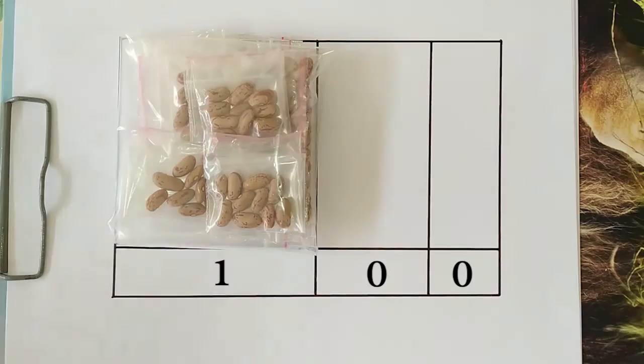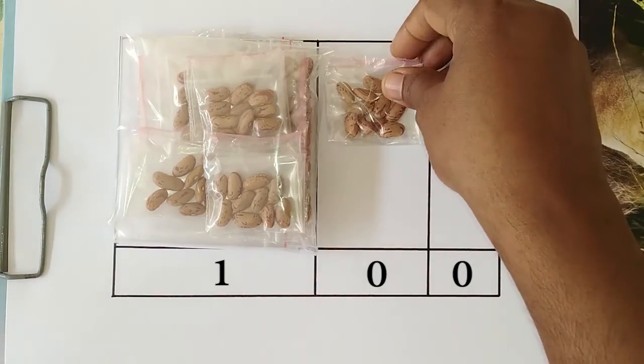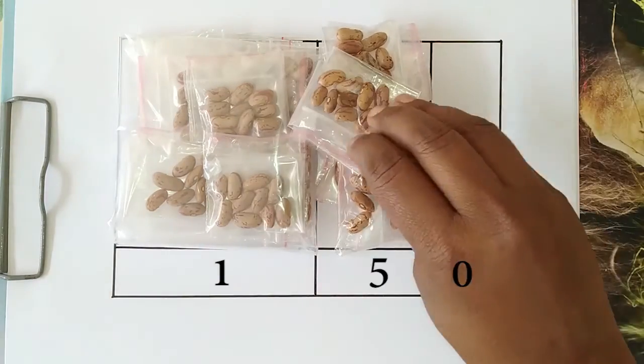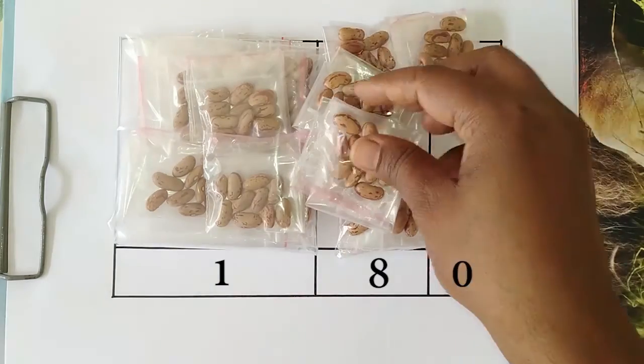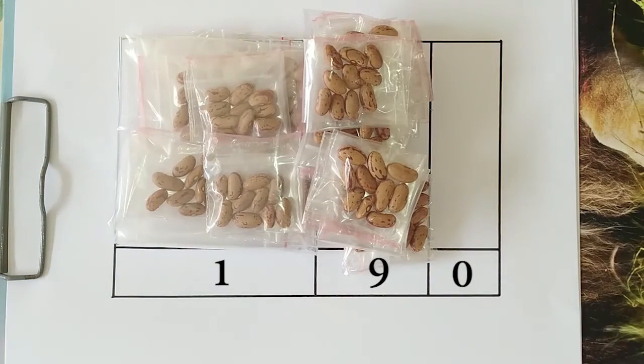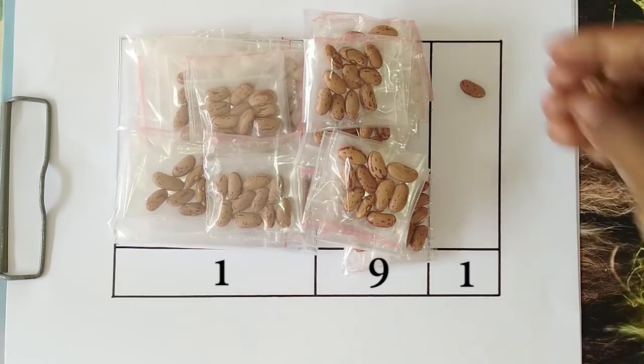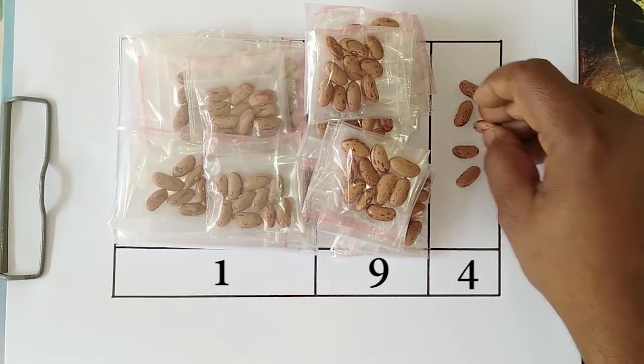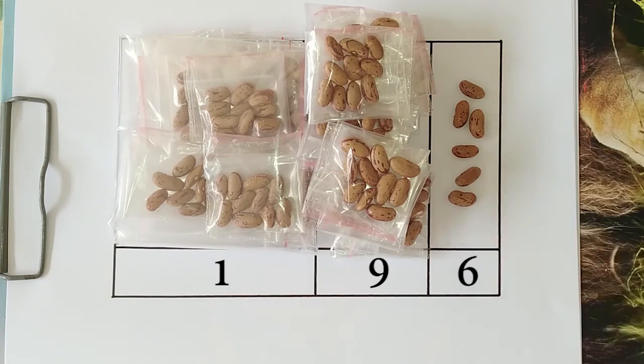Now, as we go to even higher numbers, so we get 110, 120. Like that, we go to 190. After this, as we add more beans, we put the beans slowly one by one on the rightmost column. So, we get all the way till 199.